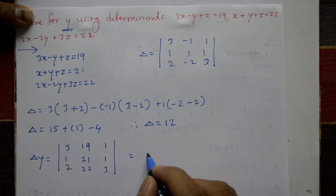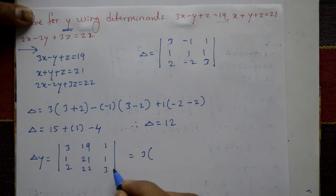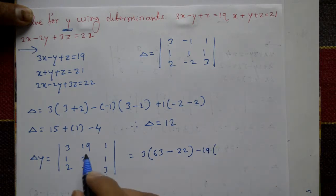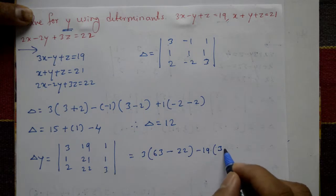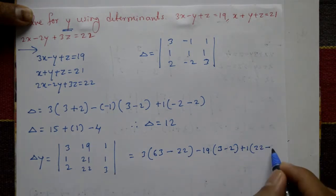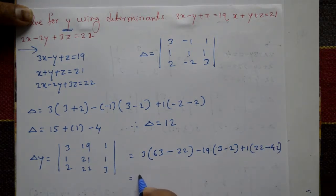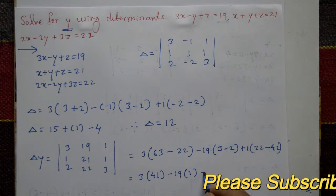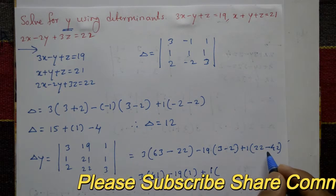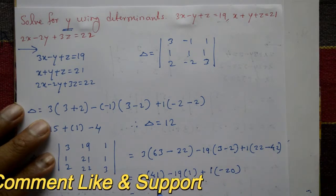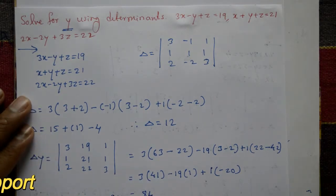Expand the Delta y determinant. 3 into (63 minus 22), minus 19 into (1 into 3 minus 2), plus 1 into (22 minus 42). This gives 3 into 41, minus 19 into 1, plus 1 into (-20). Delta y equals 84.